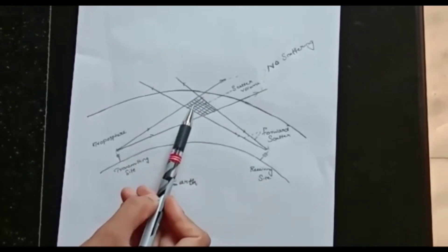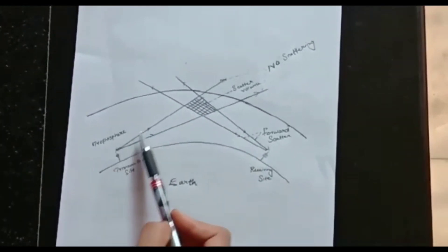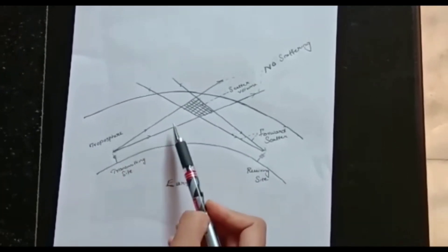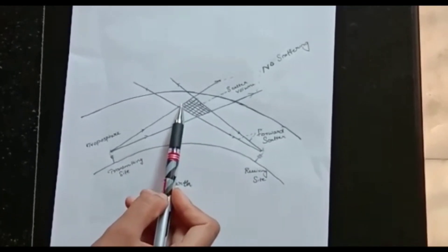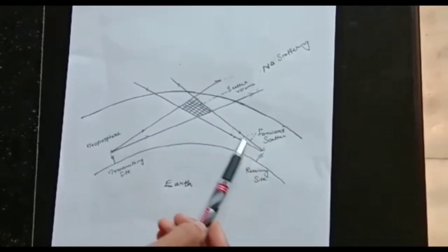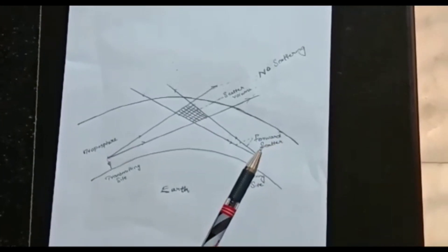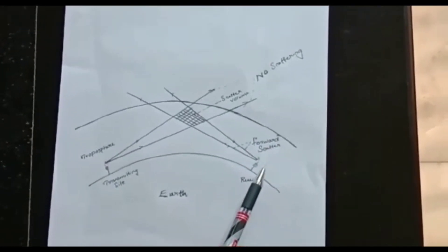Some of the signals are reflected back in the direction of the receiver antenna. Here we can see the signals transmitted by the transmitting antenna and here they are reflected back in the direction of the receiver antenna. This reflection is the forward scatter, so the troposphere scattering propagation is also known as forward scattering.